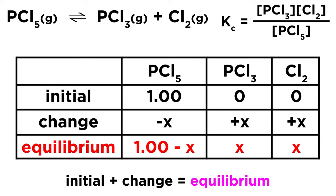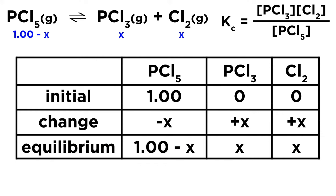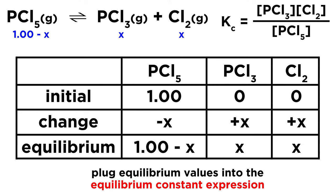Now to get the equilibrium values, we just take the initial and the change and add them together. So 1.00 minus X and then the others are 0 plus X, so simply X. Let's place these in blue up top so we have them when we get rid of the icebox. Our equilibrium values are 1.00 minus X and then X and X, because now we are ready to plug the equilibrium values into the equilibrium constant expression.